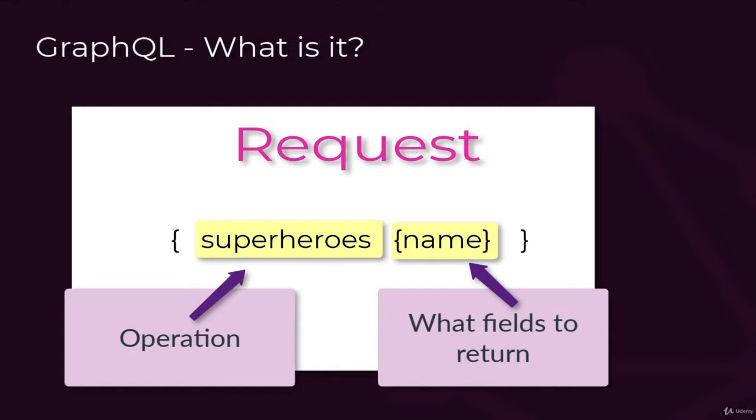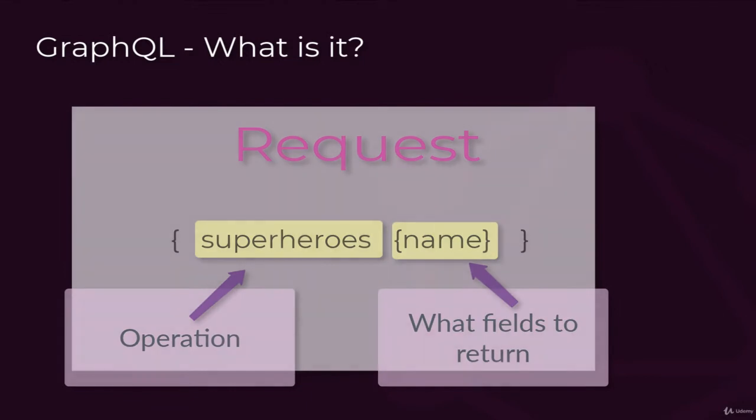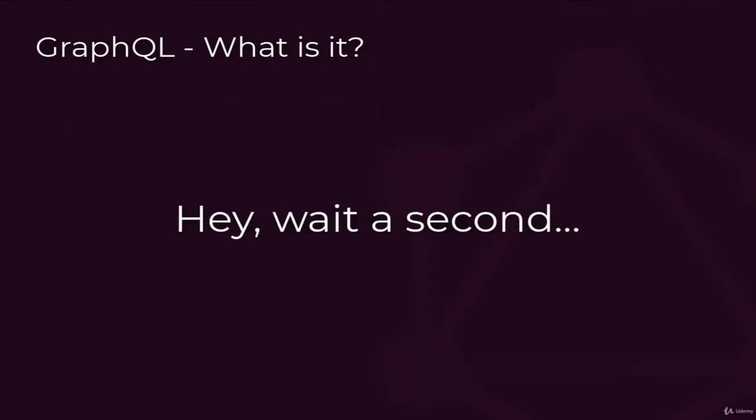In our example, we requested the Superheroes operation that gathers all known characters. Then, we specified we only want the name field of each character found returned to us. Now, you might be wondering, how do we know what operations are available, and also what fields are available for the response message?